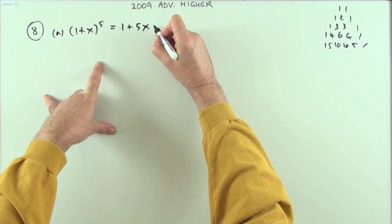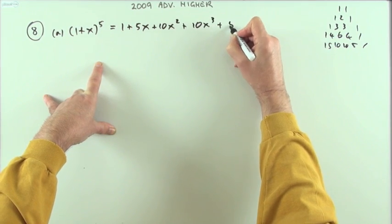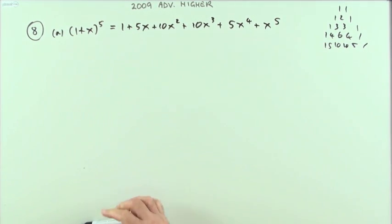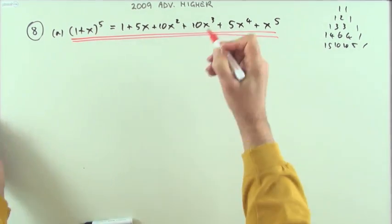Now the x has started creeping - that was x to the 0, so that's x to the 1. Then it'll be 10x squared, then 10 again up to cubed, then I'll drop to 5x to the fourth, and then finally x to the fifth. There it is for the first mark.